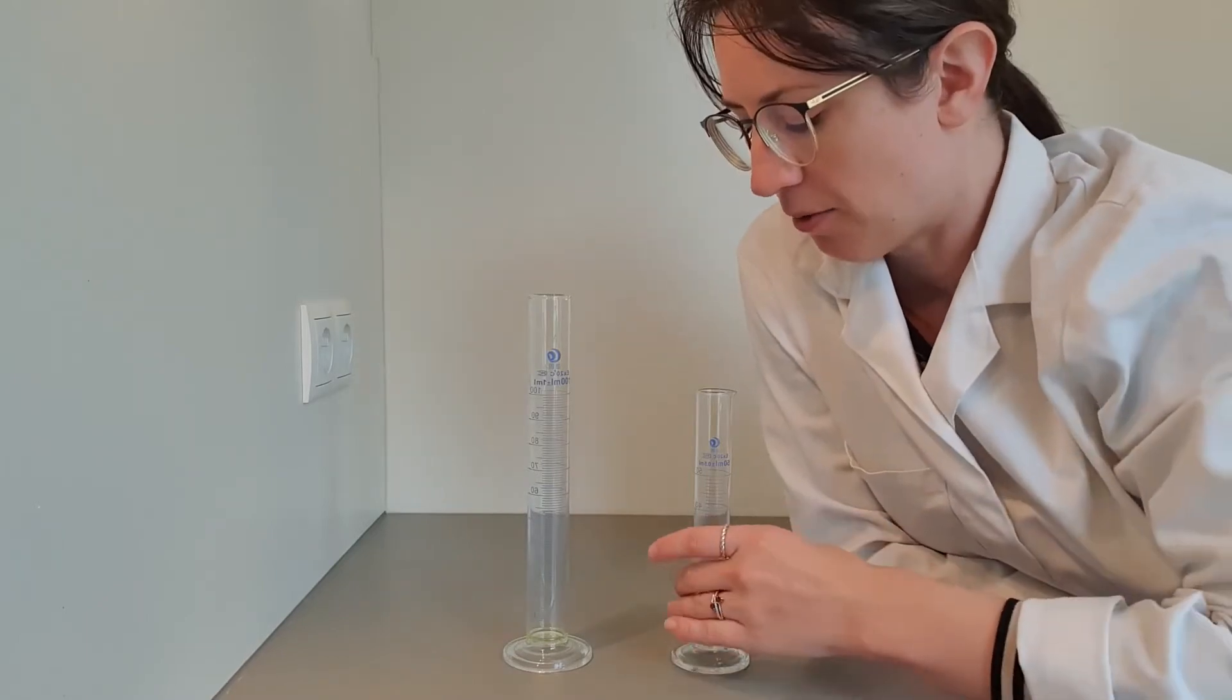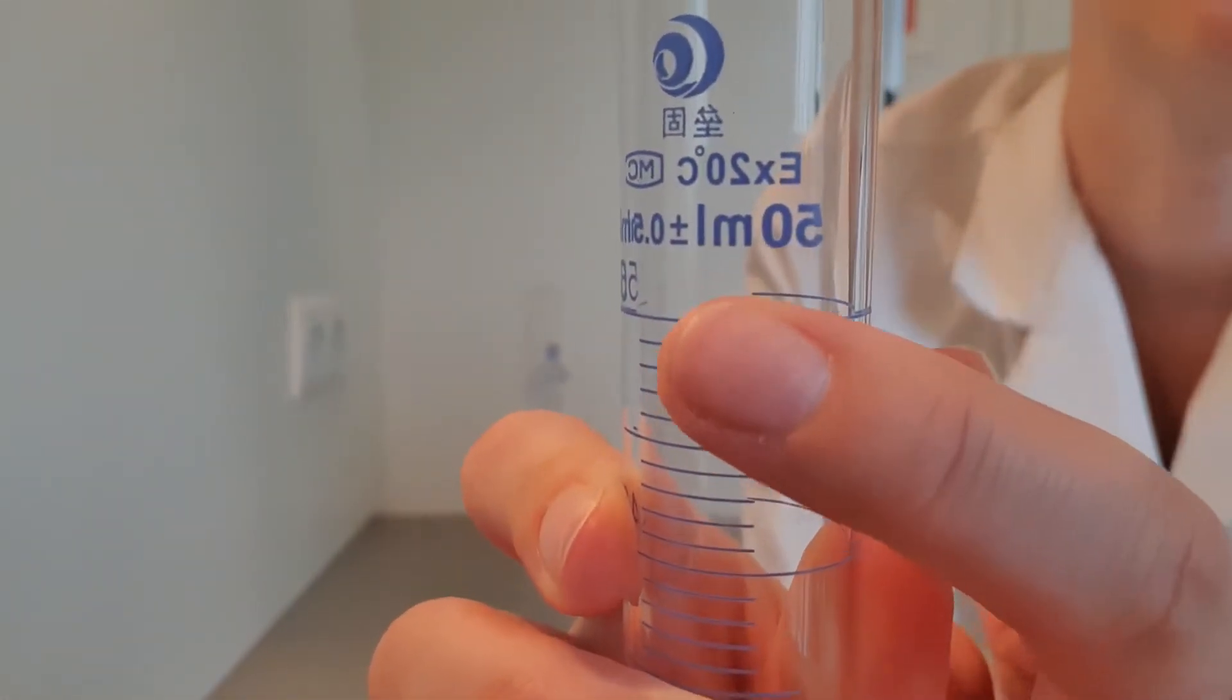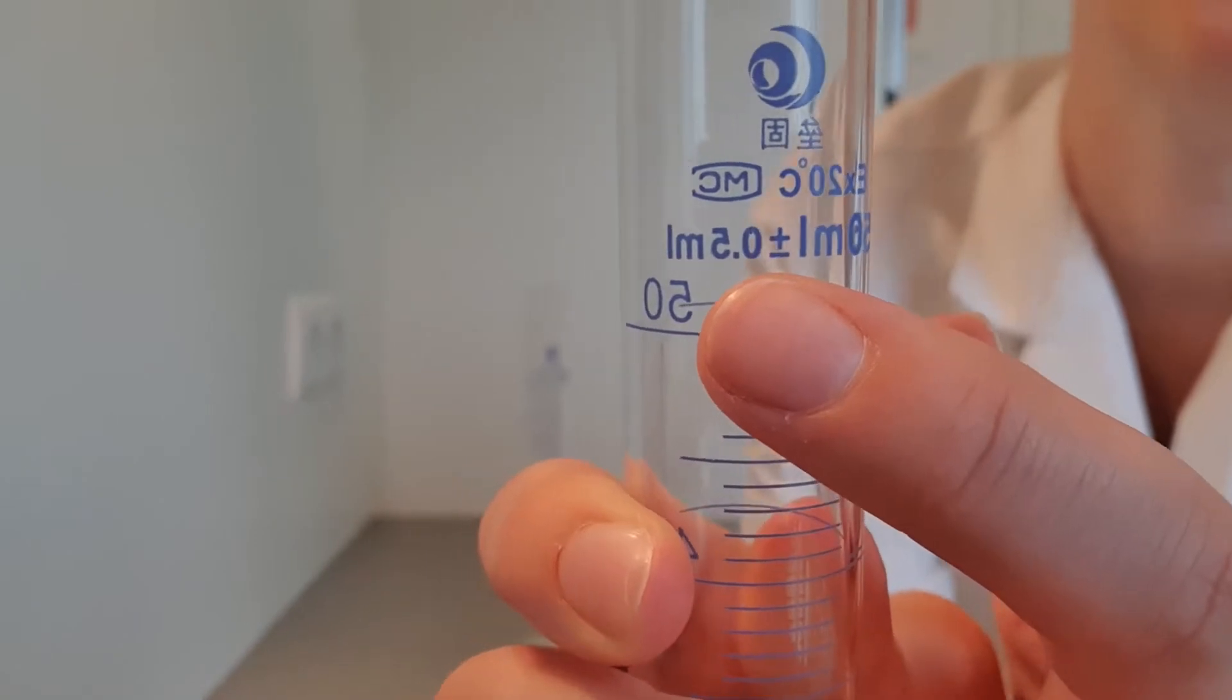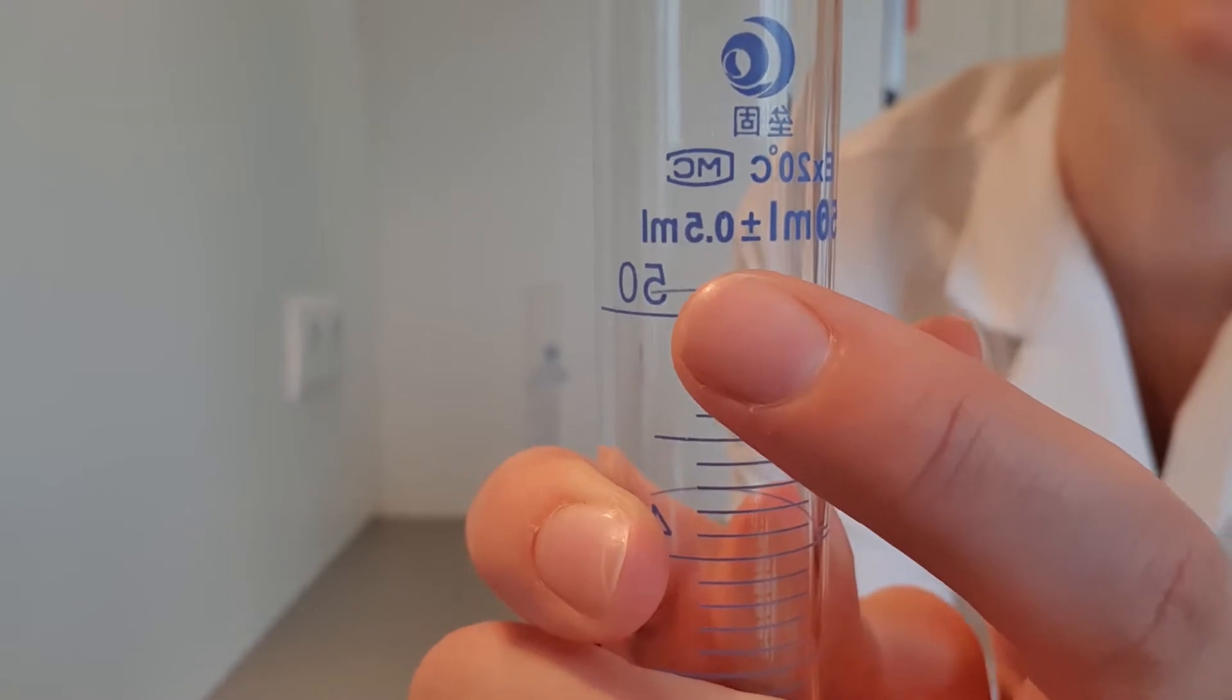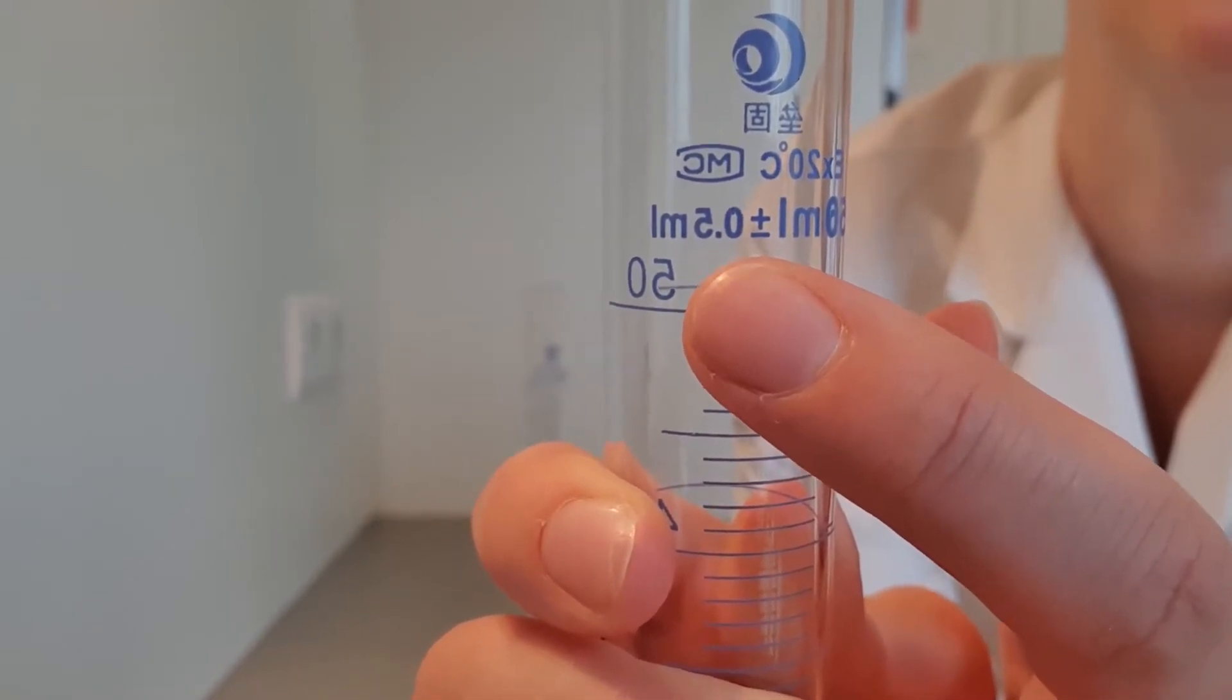So I've got a 15 milliliter measuring cylinder here, and you can see that the volume tells you 50 milliliters, and the plus or minus 0.5 milliliters tells you that this measuring cylinder is roughly plus or minus 0.5 milliliters out, so it's slightly imprecise by that volume.